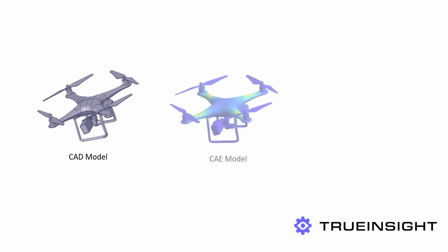CAE models build on top of that CAD model data and add simulation data for things like stress, fluid dynamics, and electromagnetic interference. This information basically explains how your product is going to behave under real-world conditions.